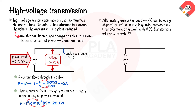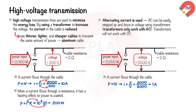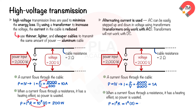In the second circuit, the voltage is increased from 200 to 2,000 volts, while the power and resistance of the cable remain the same. The current flowing through the cable reduces to 1 ampere, and the power loss in the cable becomes only 2 watts. These calculations show that the power losses in a cable when the same amount of power is sent at high voltage are much less than at low voltage.